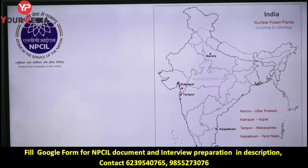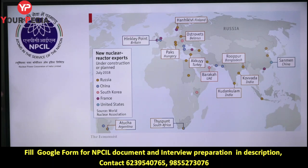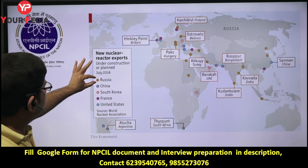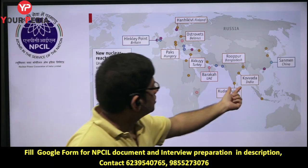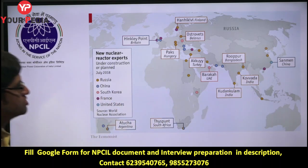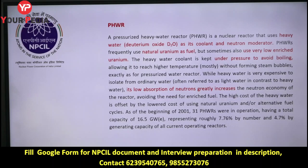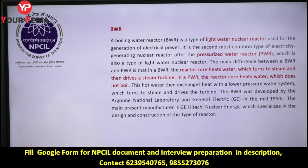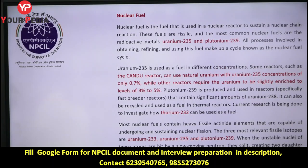Key plant locations: Narora — Uttar Pradesh; Kakrapar — Gujarat; Tarapur — Maharashtra; Kalpakkam — Tamil Nadu. Kudankulam is a Russian reactor — Russia, China, and South Korea are involved in some reactors. Russia's involvement is in Kudankulam. For the Pressurized Heavy Water Reactor (PHWR): deuterium is called heavy water, and at high pressure, boiling is avoided — that is the main reason for pressurizing it. Out of 22 reactors, the majority are PHWRs. Nuclear fuels include uranium-235, uranium-238, plutonium-239, thorium, and deuterium.